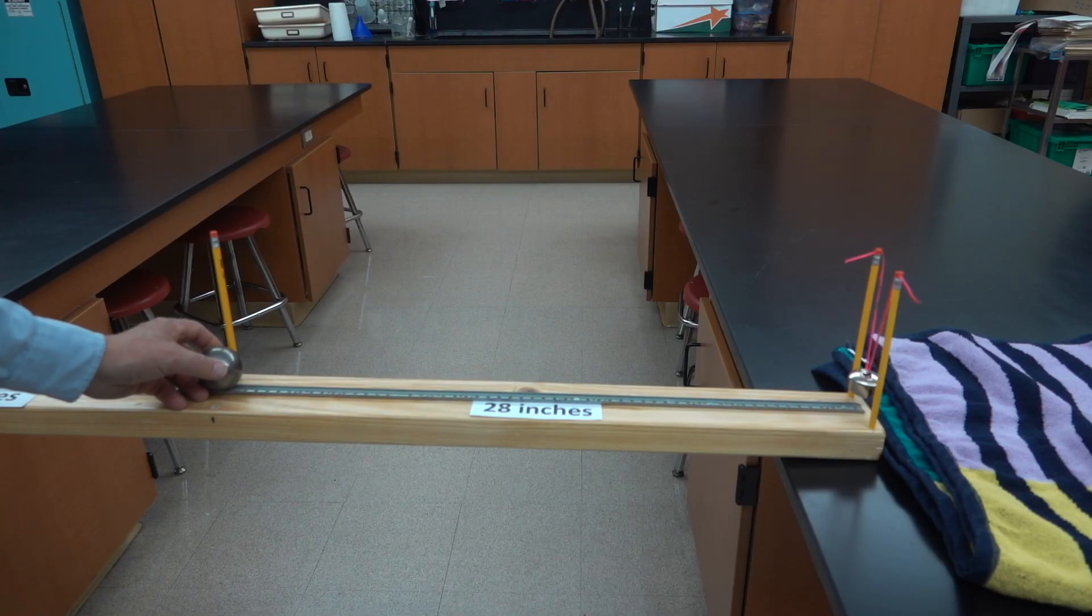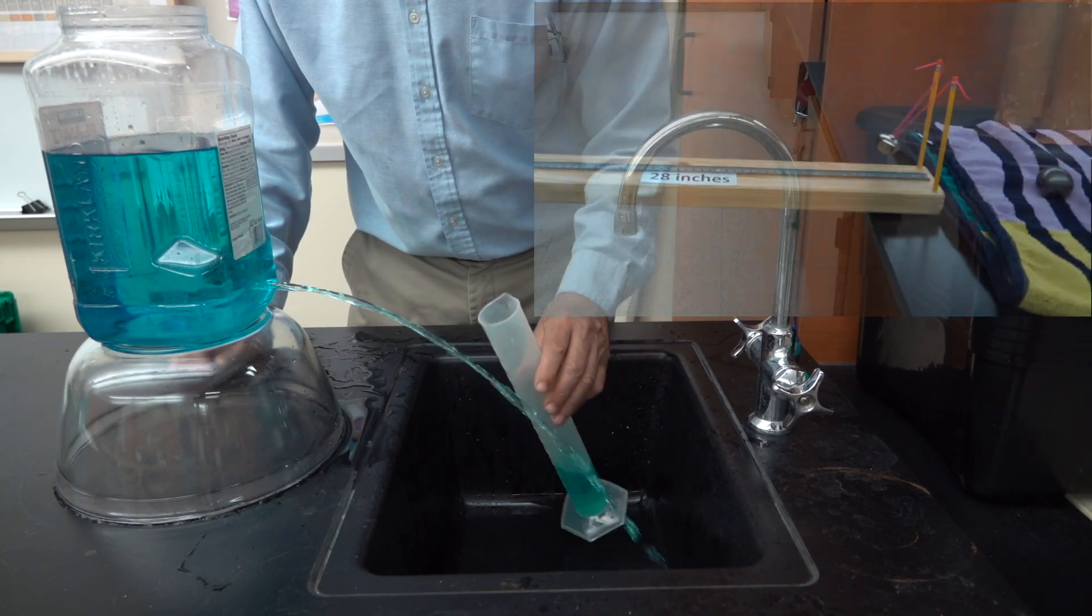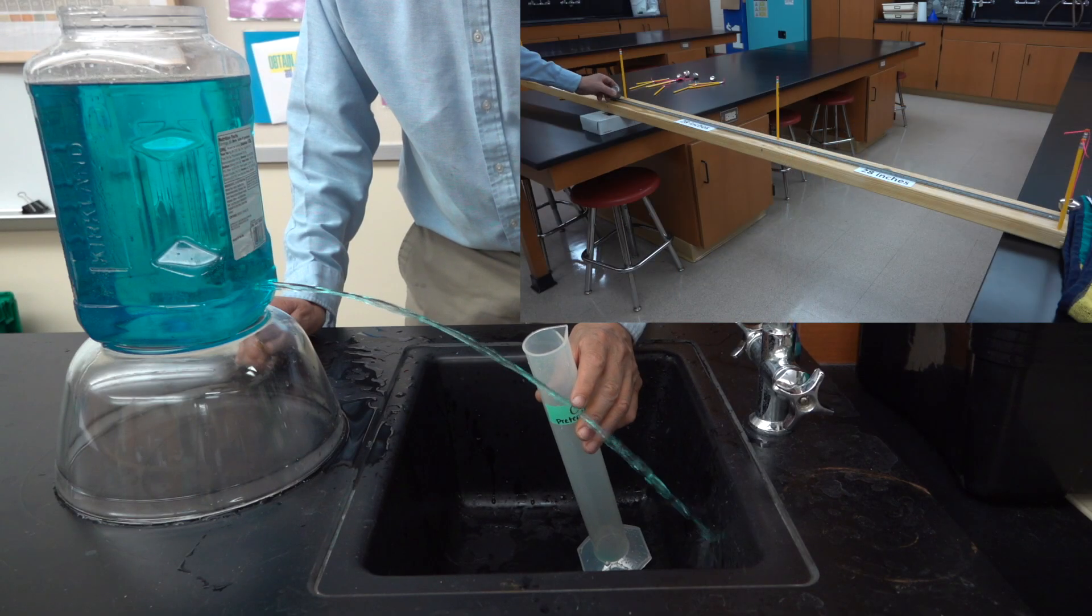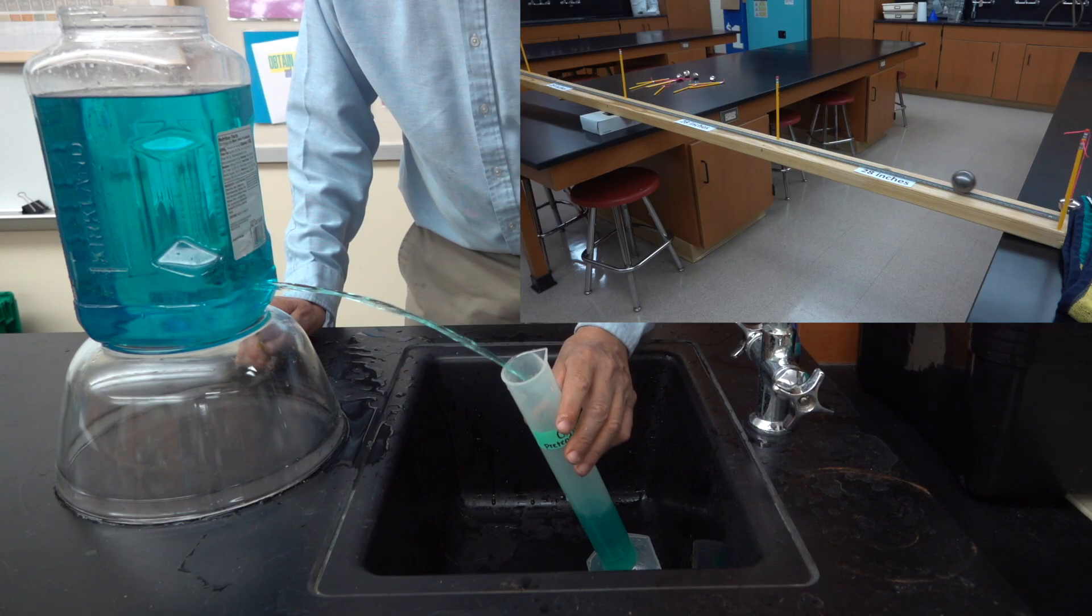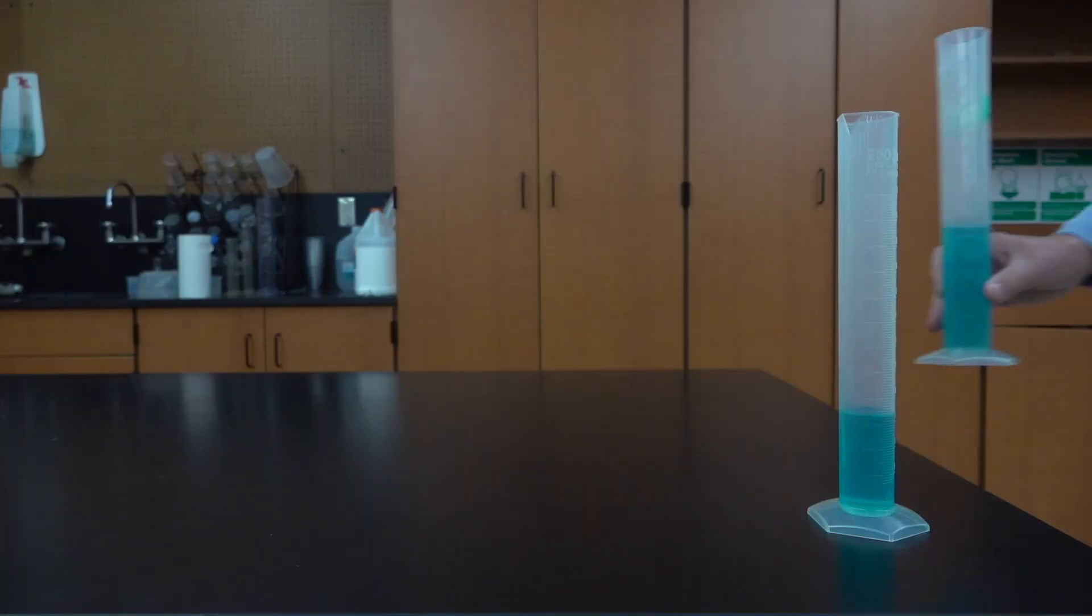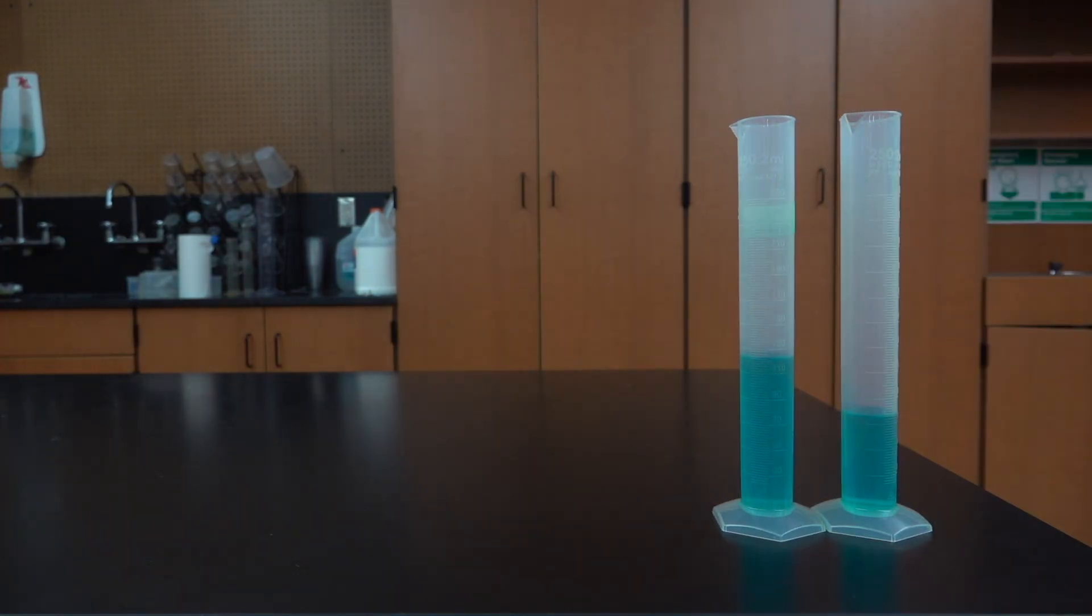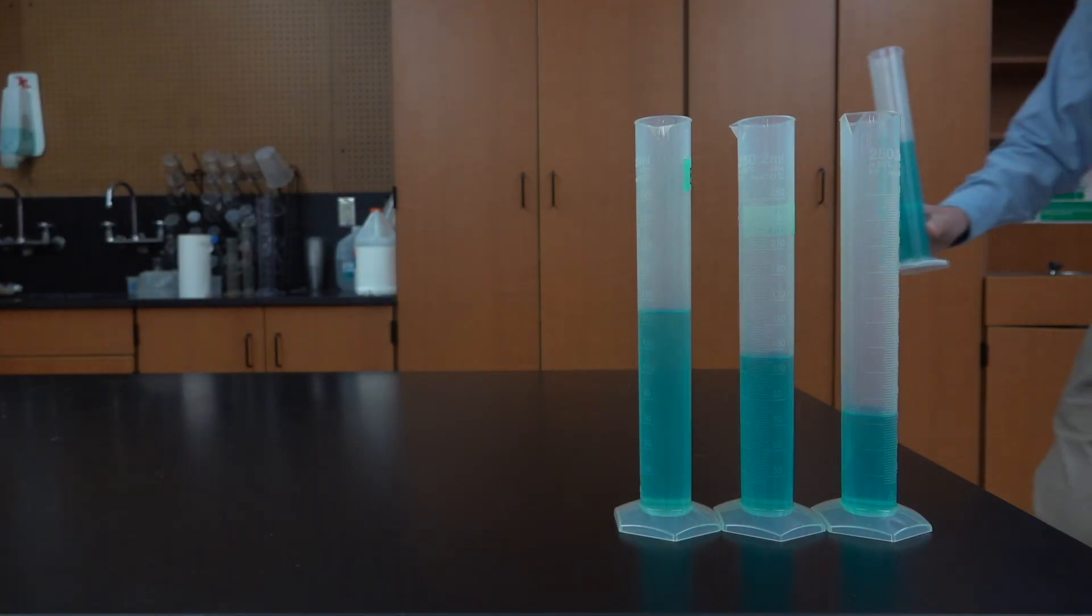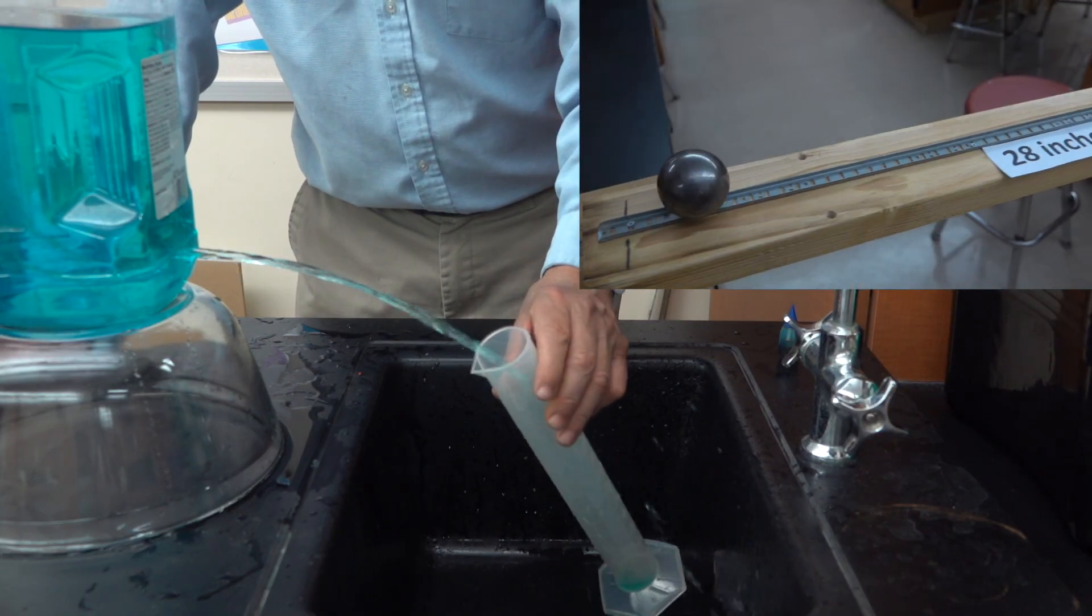We're going to start by measuring the bottom segment for time using that water clock. Here's our first measurement. Now we'll measure it for twice as far. Due to that it's accelerating, it's not quite twice the time. Here's a measurement for three times the distance. Four times the distance. And here's the whole distance.